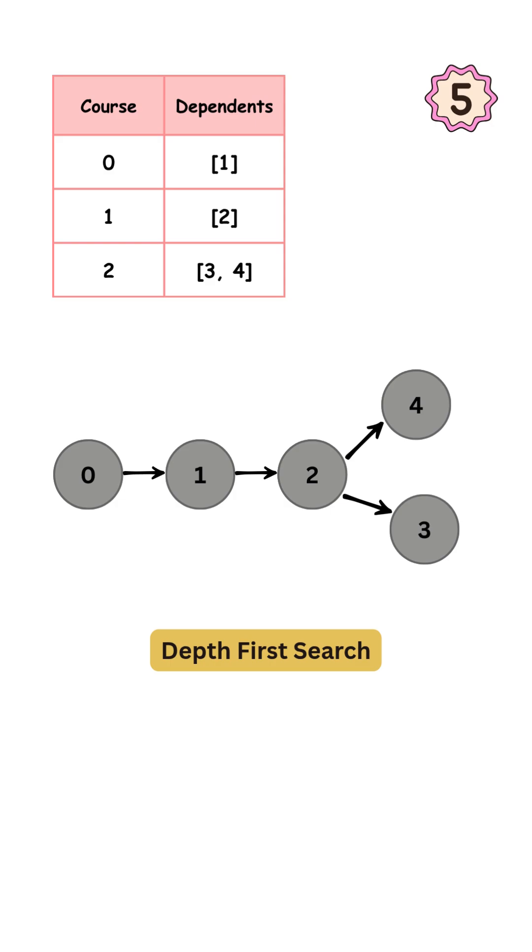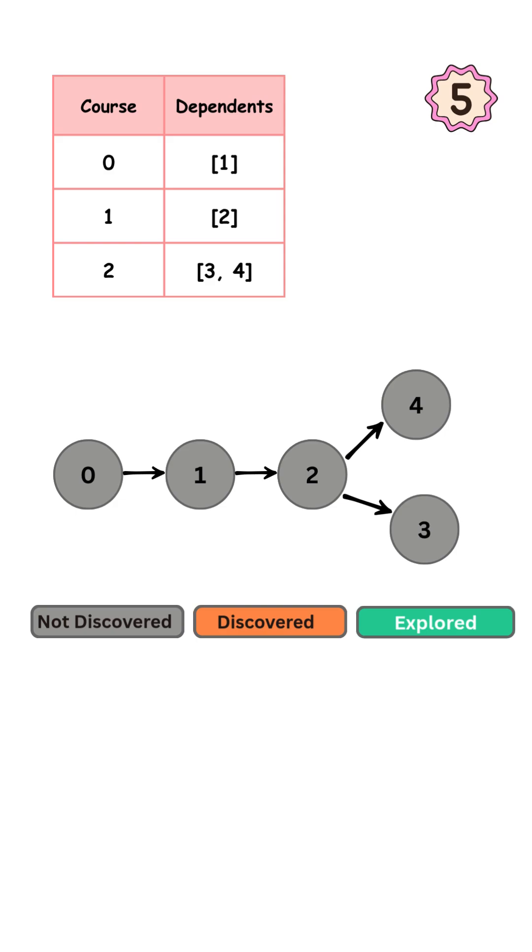We will use colors to track node states during our depth-first search traversal. Gray means it's not discovered yet. Orange means it's discovered. We've reached the node, but we haven't explored all paths from it. Green means explored. All paths have been visited. We only move to a node if it's still gray, meaning it hasn't been discovered yet.